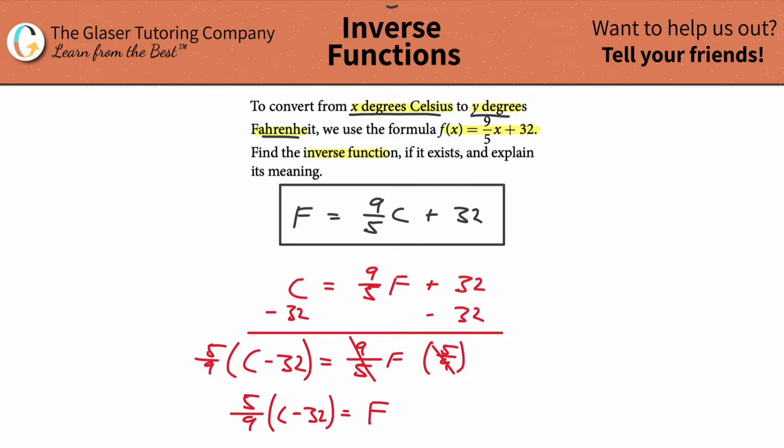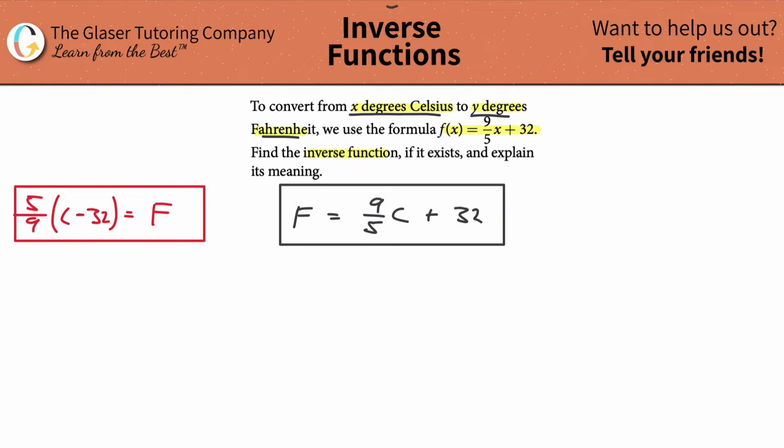I'm just going to rewrite it now because nobody really likes to have the F on the right side. So this now represents F equals 5/9 times C minus 32. So these are obviously non-identical formulas. They're not identical formulas. And the question now becomes what is the relationship between these two? Remember, this was the original, and this is then the inverse function. So what is the significance? Explain the meaning now of this inverse function.